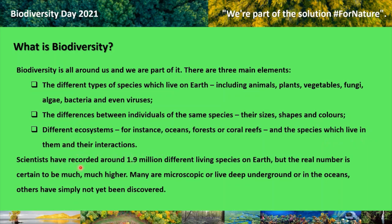Scientists have recorded around 1.9 million different living species on Earth, but the real number is certain to be much, much higher. Many are microscopic, or live deep underground, or in the oceans. Others have simply not yet been discovered.